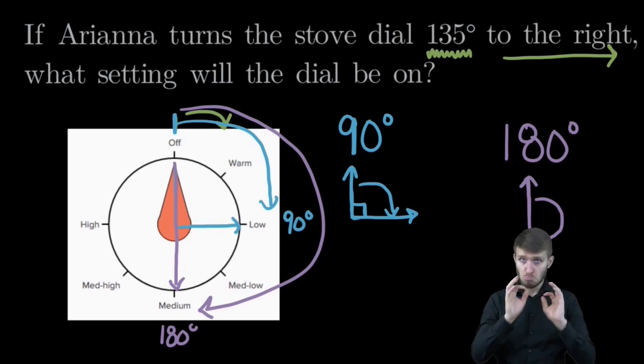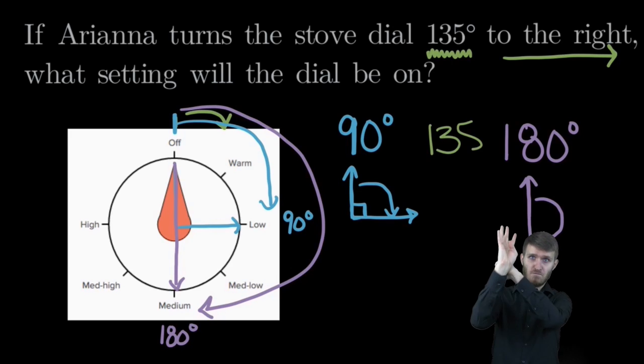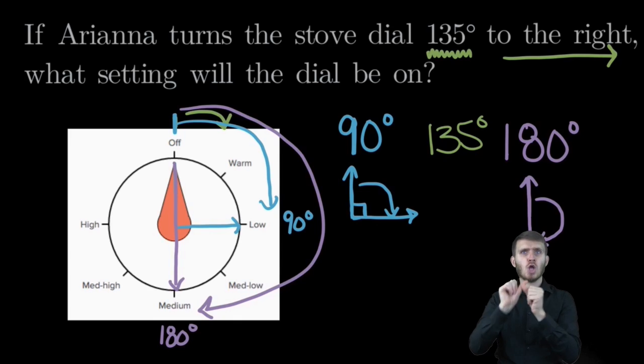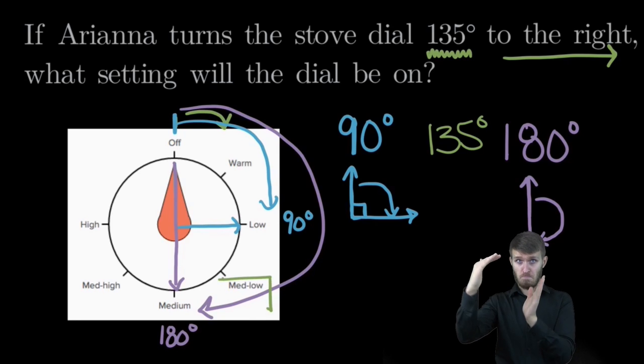So where does 135 fall? Well, 135 falls somewhere in between 90 and 180. 90 was not far enough of a turn, and 180 was too far of a turn, so we want something in the middle. And what setting is in the middle of the 90 and the 180? Right here in the middle of them is medium-low.